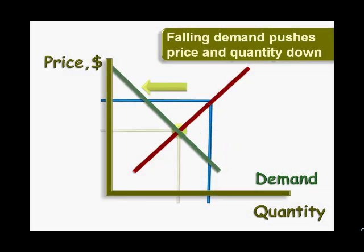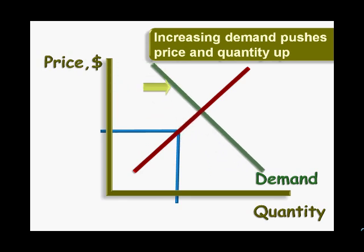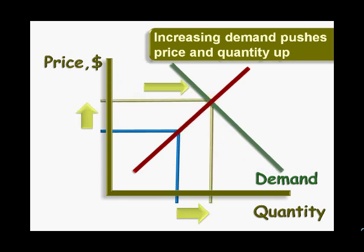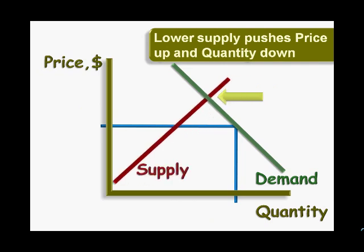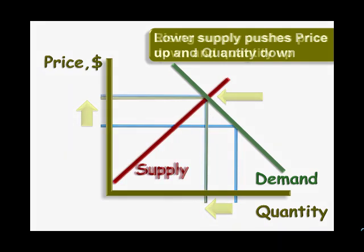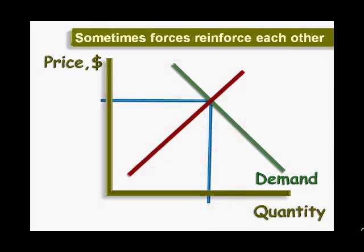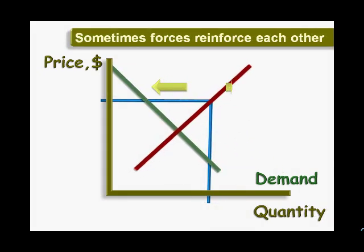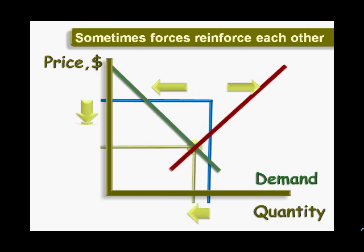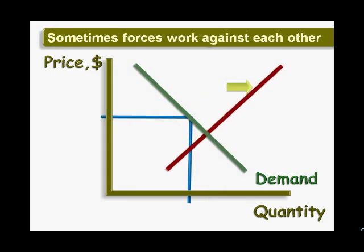Understanding market forces is essential to understanding what is happening in a marketplace. Supply and demand can either increase or decrease, and the effect of market forces can be summarized by four simple rules: falling demand puts downward pressure on prices and quantity; increasing demand puts upward pressure on prices and quantity; lower supply puts upward pressure on price but downward pressure on quantity; increasing supply puts downward pressure on price and quantity. Sometimes more than one force is at work, and the effects can reinforce each other or work against each other.